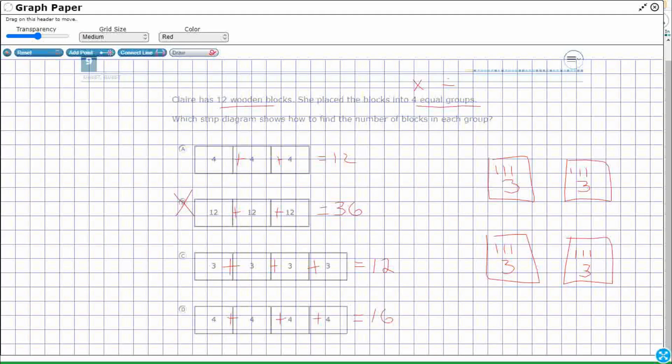So even if we didn't want to draw our own representation here, take a look. We're going to get rid of B. We're going to get rid of D, simply because they don't even make 12. They show a total greater than 12.